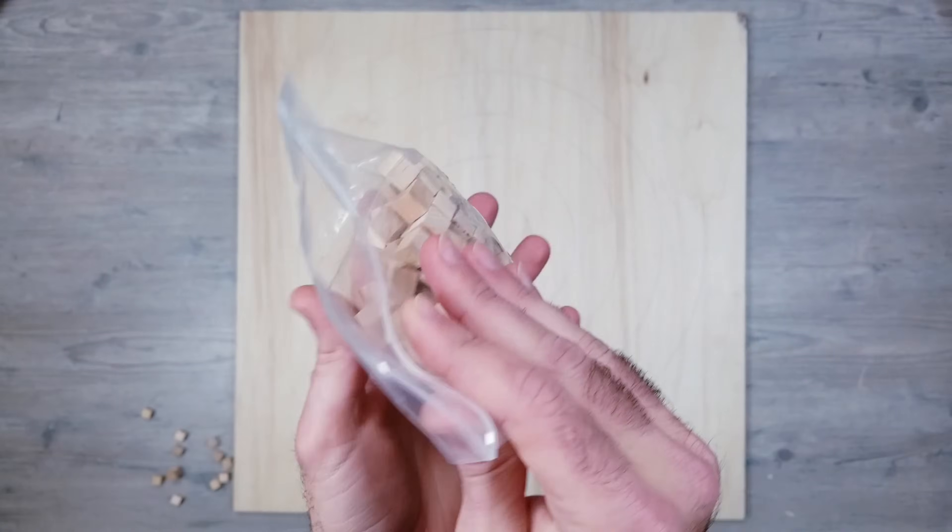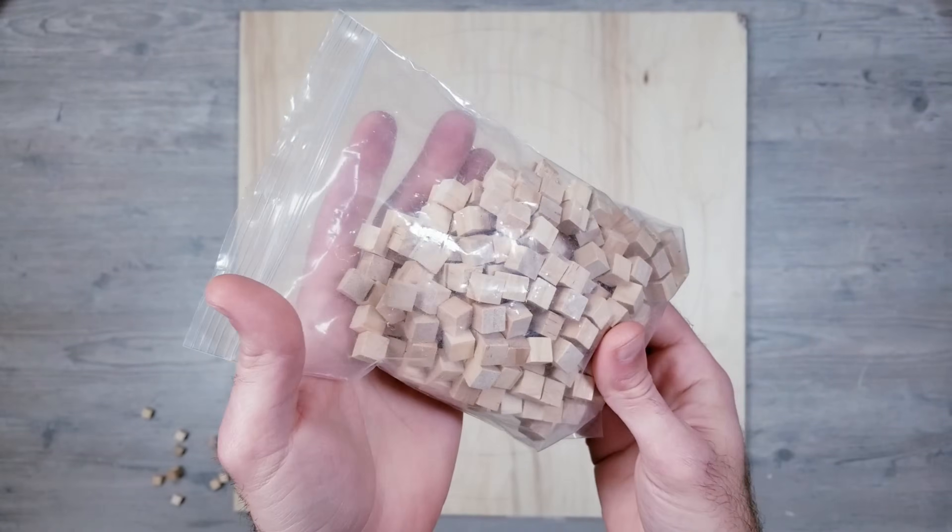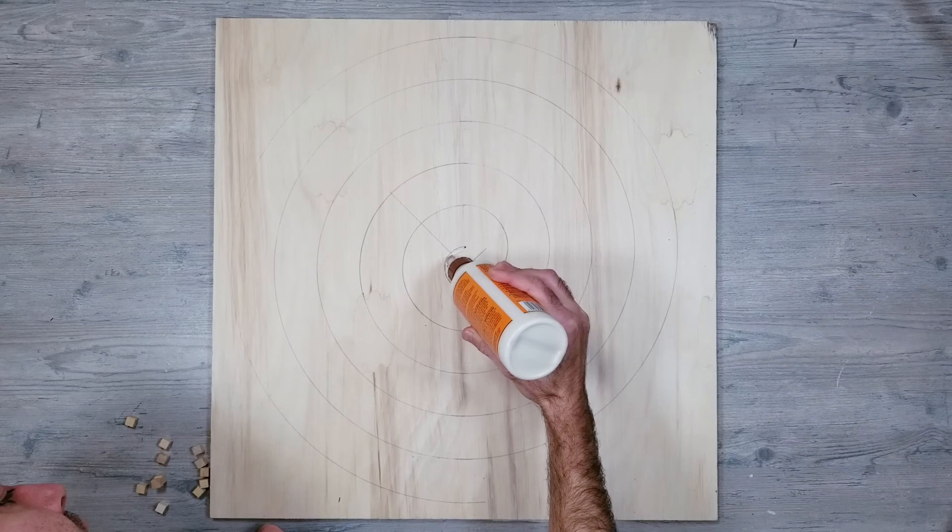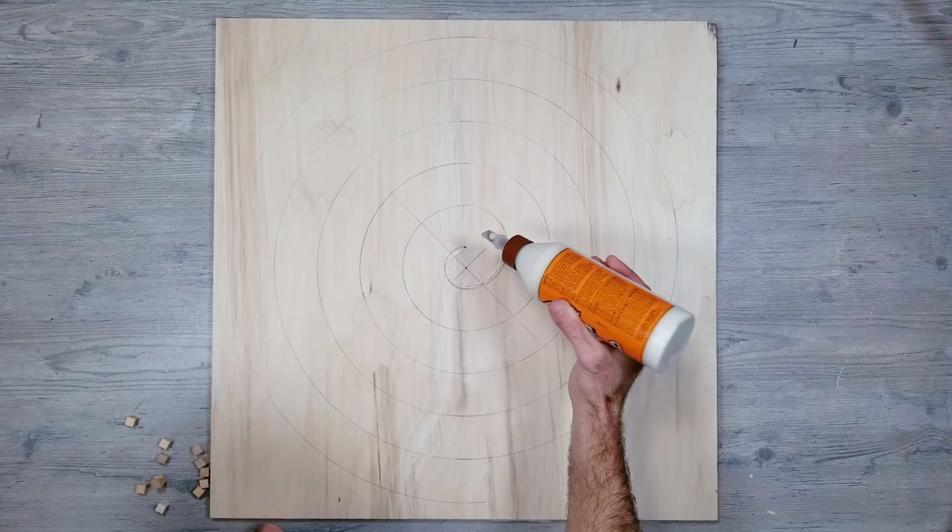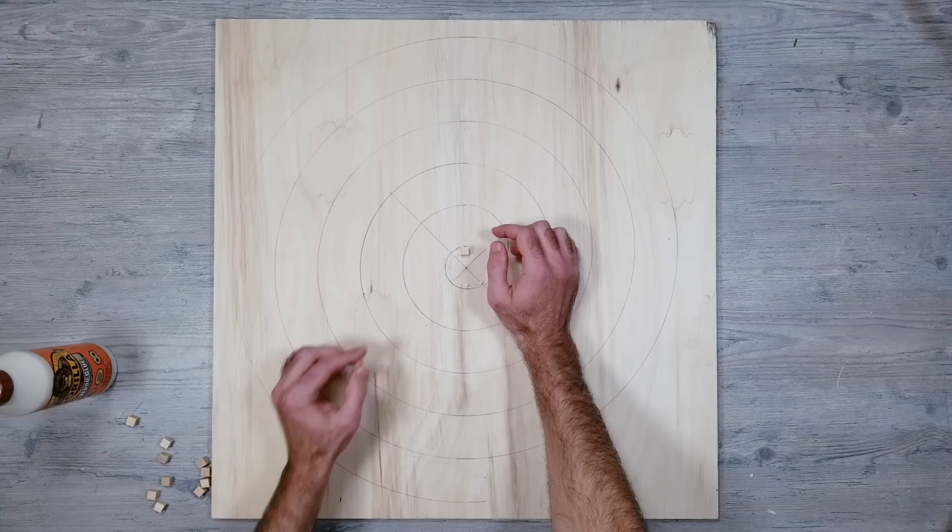So here I went back and forth on what to use for this next part, but I ended up going with these small wooden craft cubes. And we're going to use the line we just made with the compass as a guide to glue each of these pieces to the plywood one by one.